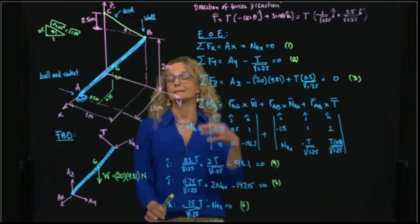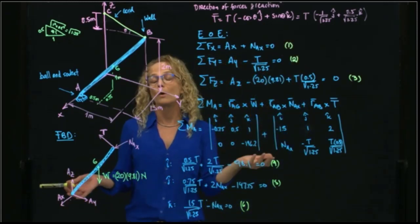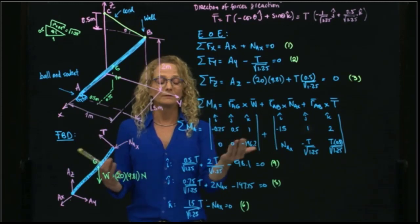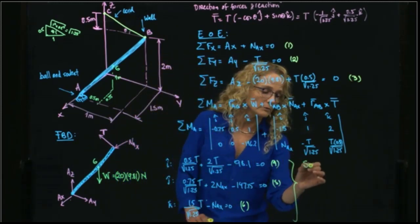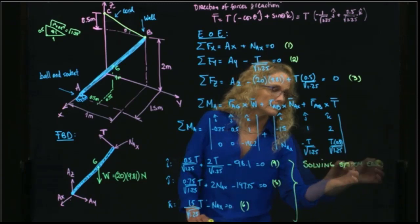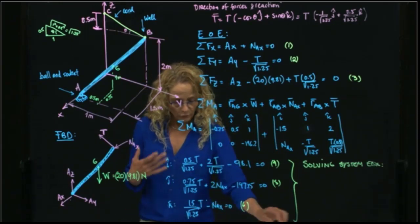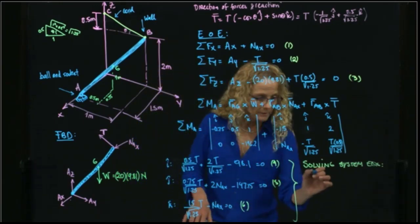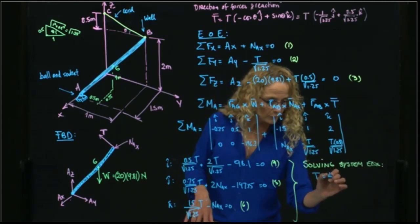Of course, this is a system of five unknowns and six equations. So I actually have one more that will just give me the same result. So solving the system of equations, I get the results. Please solve the system, and you will find out the result. So tension is equal to, I already rounded to the first decimal, 58.9.